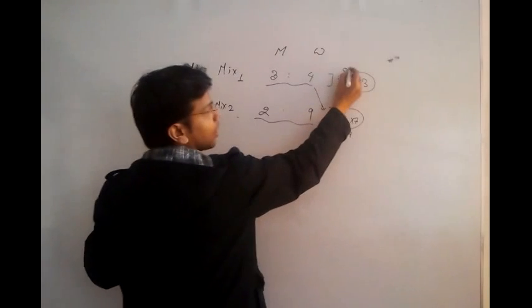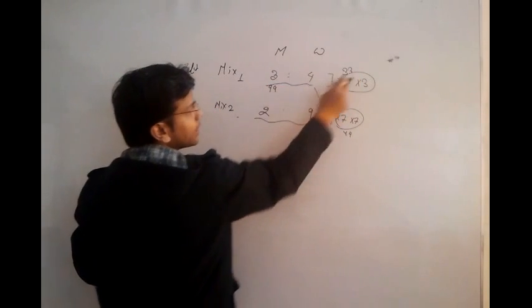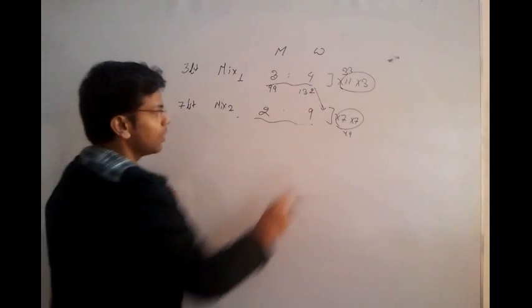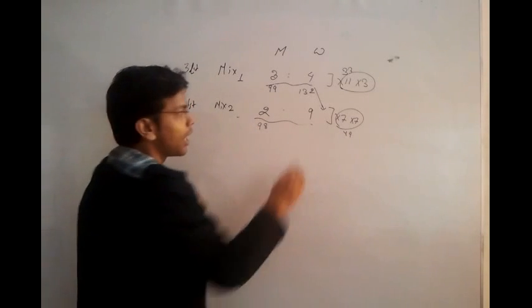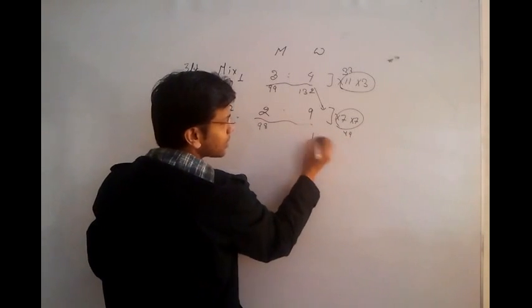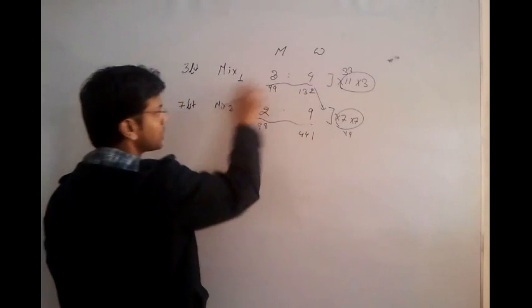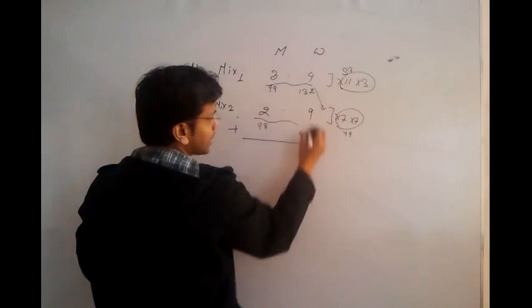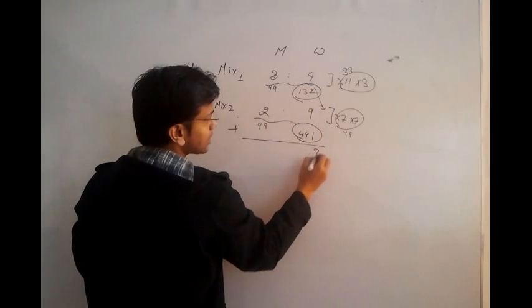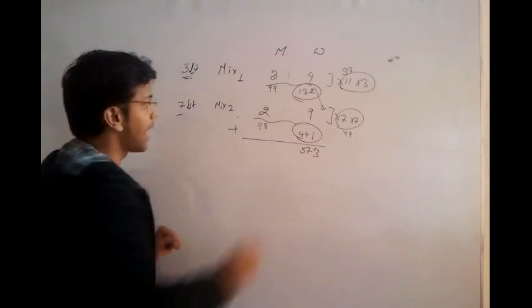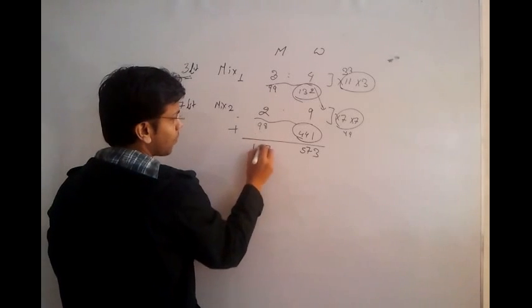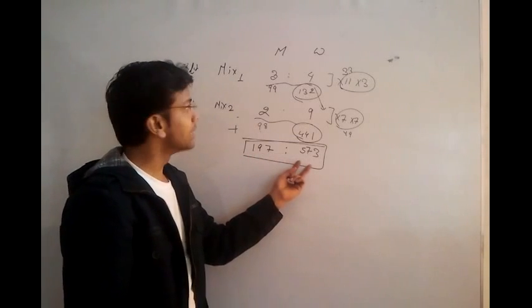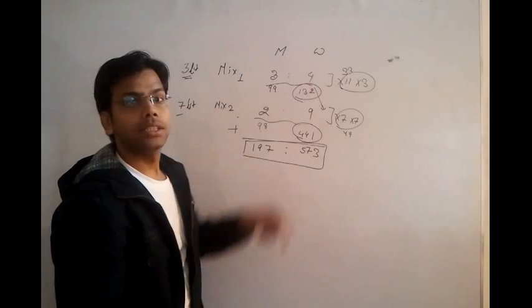No cancellation possible. 33 into 3 is 99. 33 into 4 is 132. 49 and 2 is 98. And 49 and 9 is 441. So: first, weight is cross-multiplied; then the required volume is multiplied; then multiply and add. The result is 132 plus 441 equals 573, and 98 plus 99 equals 197. So this is my answer: 197 to 573 is the ratio of milk to water in the resulting mixture.